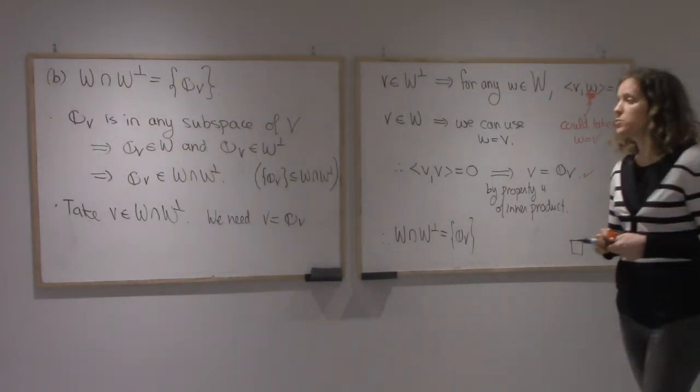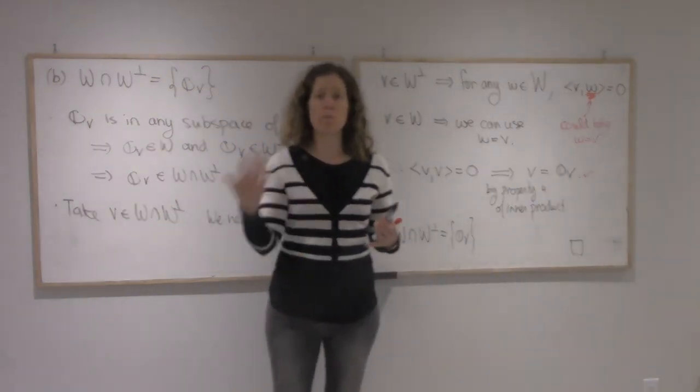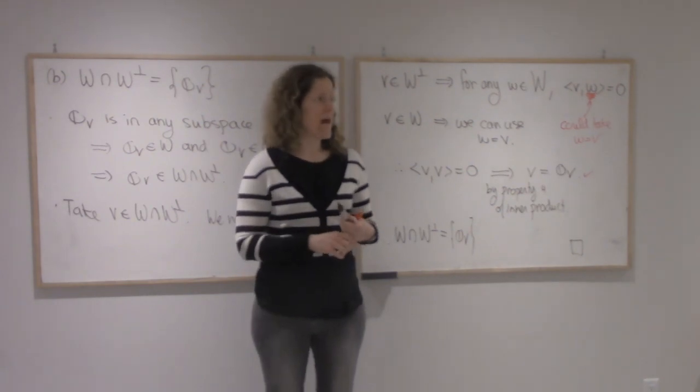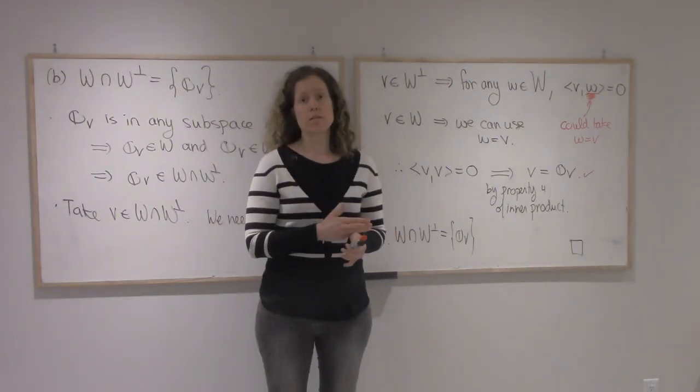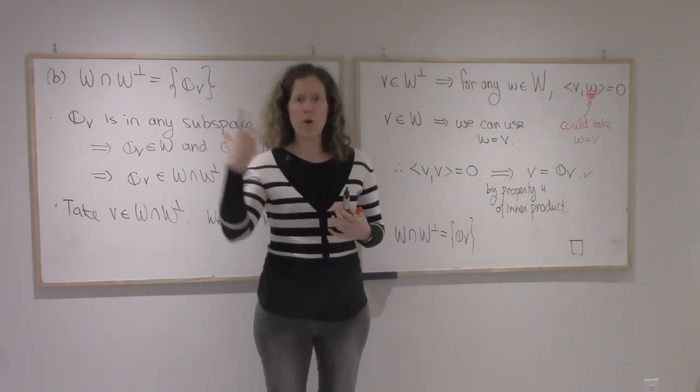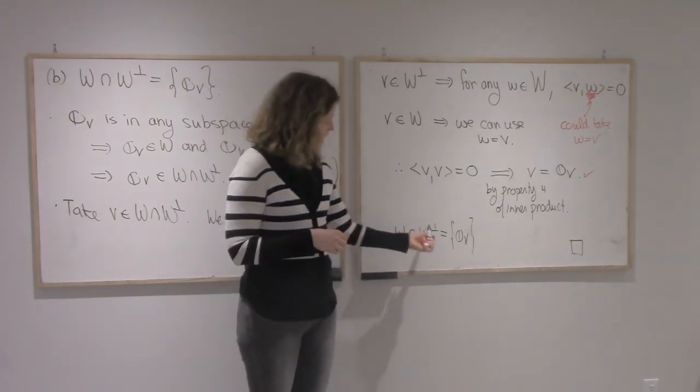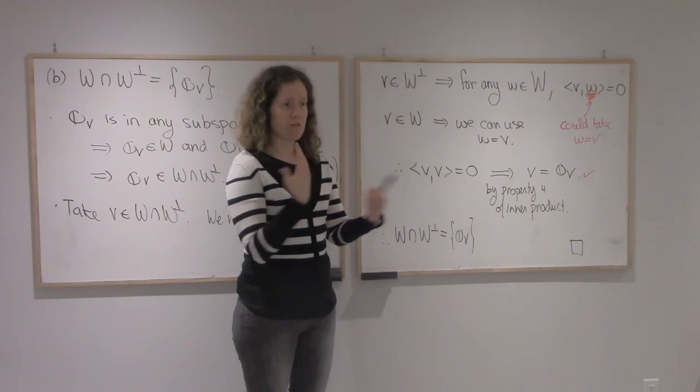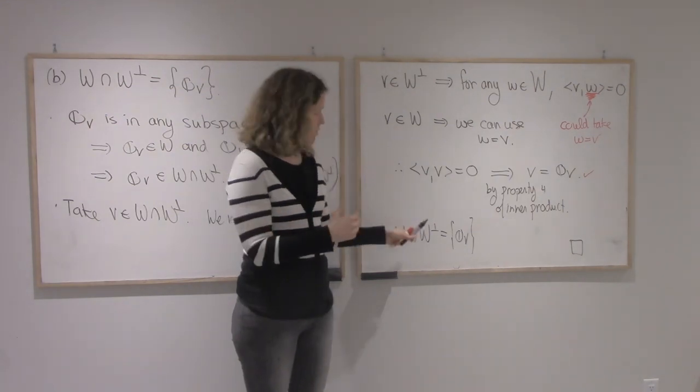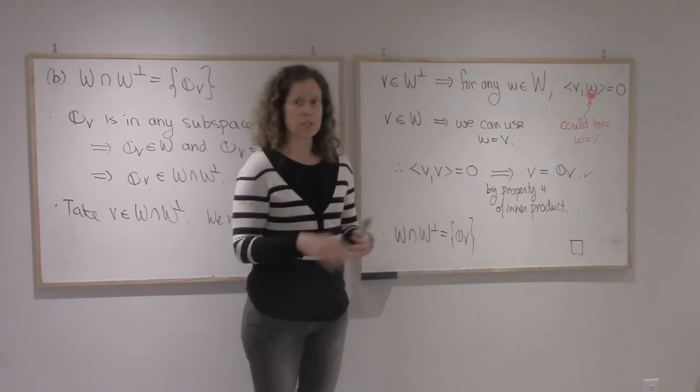Alright, so at this point we know W-perp is a subspace. That means I'll be able to ask you for a basis for it. And we know they intersect in only 0. We saw that in the two examples we did last video as well. And one thing we'll prove in the upcoming weeks is that actually, these not only intersect only in 0, but if you add them you get all of V. And so these form some sort of direct decomposition of V.